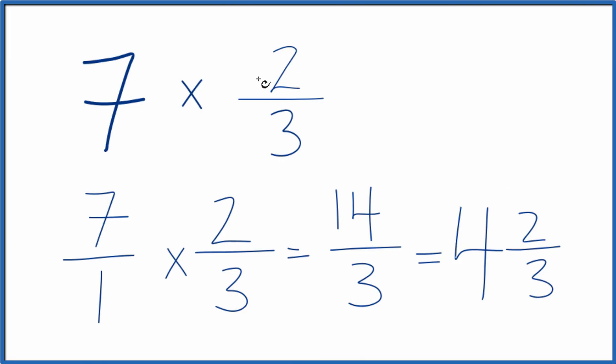So in answer to our question, 7 times 2 thirds, that equals 14 thirds. Or if you need a mixed number, 4 and 2 thirds.